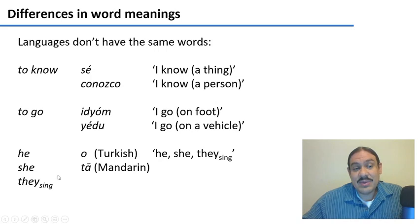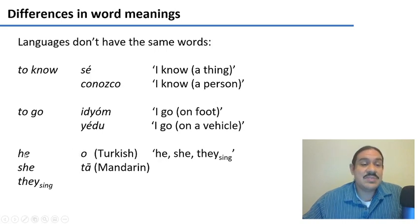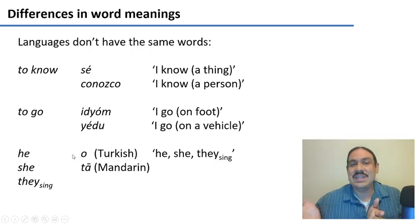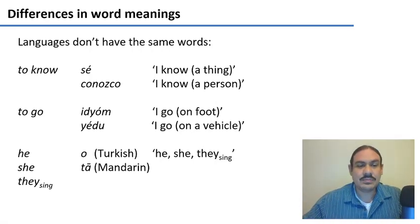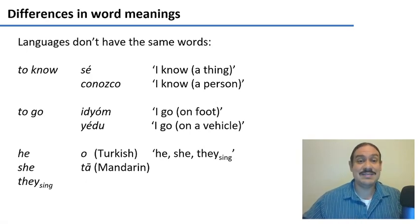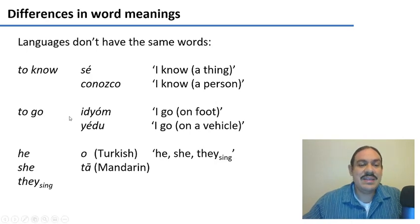This can also happen the other way around, where you have several concepts in English that are conceptualized as being the same in other languages. For example, in English we have the pronouns 'he,' 'she,' and singular 'they,' whereas Turkish would only use one word for all of those — the word 'o,' as in 'o yer,' meaning she eats, he eats, or they eat. Mandarin Chinese does the same with 'ta,' which can mean any of these. So you can see that words don't need to correspond from language to language.